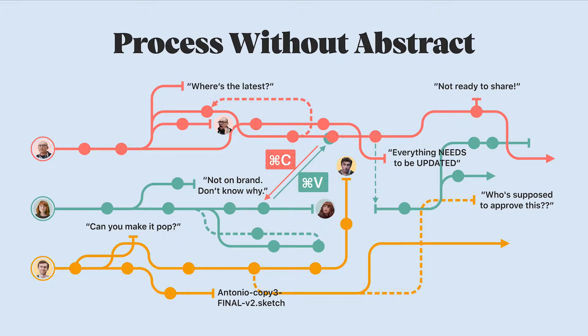For most teams, designers simply create copies of the original file so that they aren't changing the original, and then they save the copy with a new name after making some amount of changes. They might save several different copies if they decide to go in different directions. That's how you end up with file names like "Antonio Copy 3 Final Version 2" and comments such as "not on brand," "don't know why," or "everything needs to be updated."